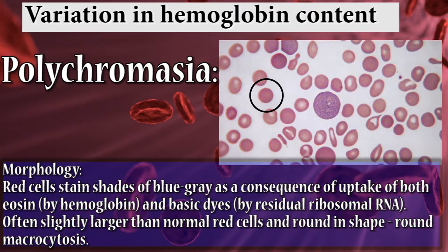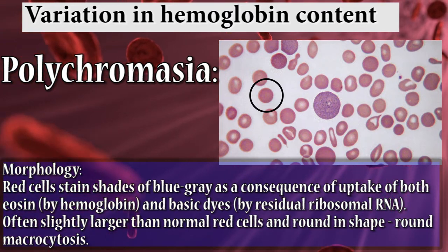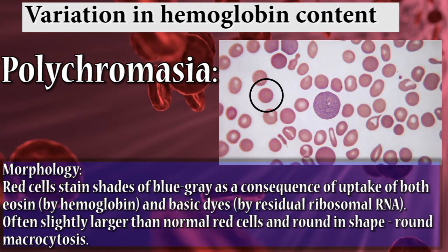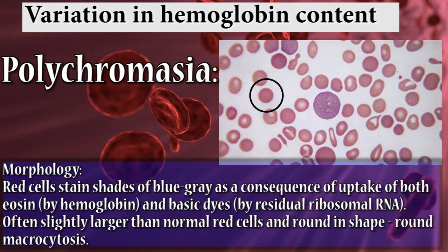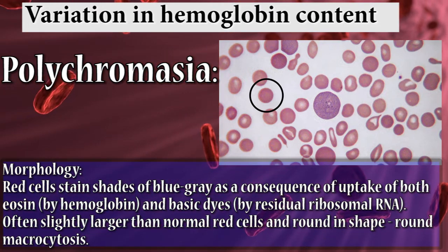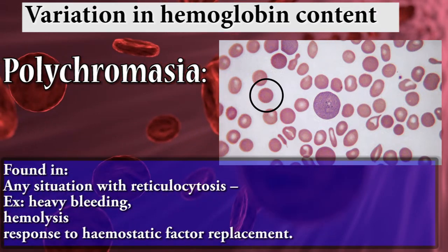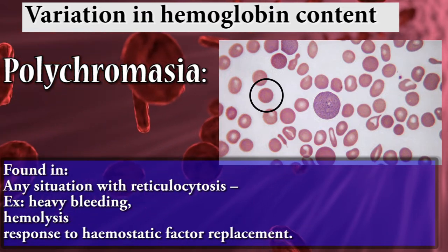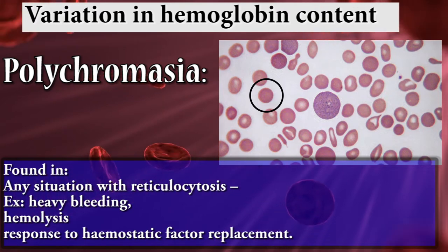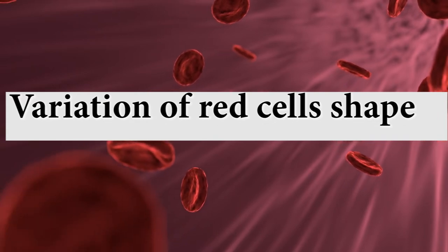The second variation in hemoglobin content is polychromasia. Red cells display shades of blue-gray as a consequence of uptake of both eosin and basic dyes. Often slightly larger than normal red cells and round in shape. Found in any situation with reticulocytosis, such as heavy bleeding, hemolysis, and response to hematopoietic factor replacement.